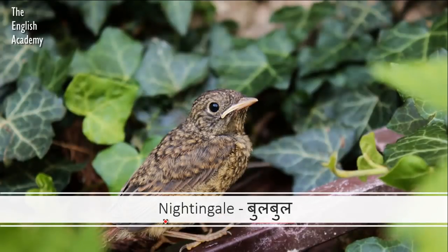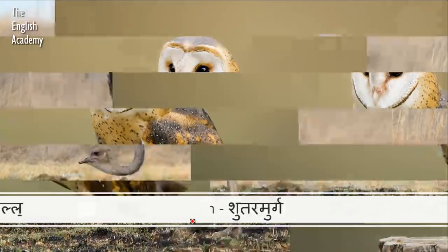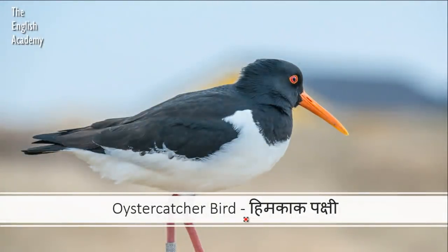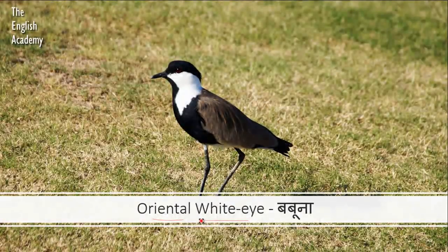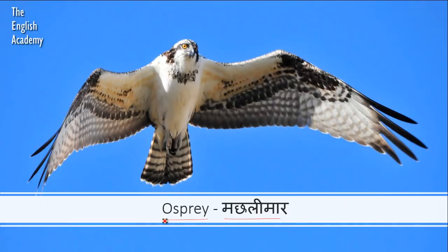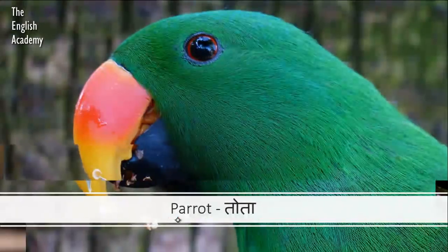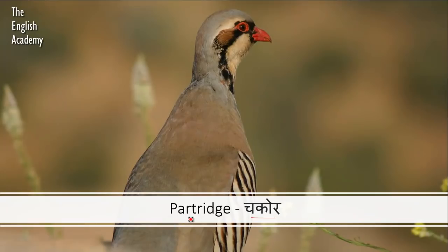Next we have Bulbul. It is known as a Nightingale. Then we have Ullu, known as an Owl. The next word is Shutramurg. Isse hum Ostrich kehte hain. Next we have Himkaak Pakshi, known as Oyster Catcher bird. The next word is Babuna. Isse hum Oriental White Eye kehte hain. The next word is Machli Maar, known as Osprey.